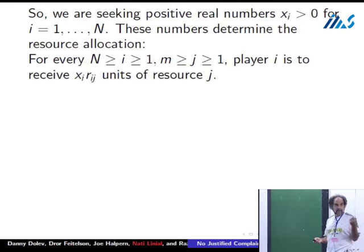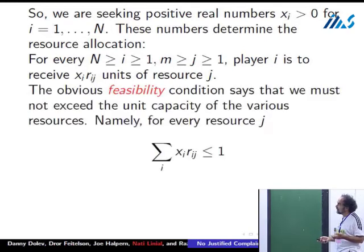Feasibility is quite obvious, and the non-trivial part is coming in explaining what fairness means. Feasibility is obvious: we have one unit of supply from each resource, and of course we cannot give more than we have. If you take any resource, then what we've given away from this resource cannot exceed one.